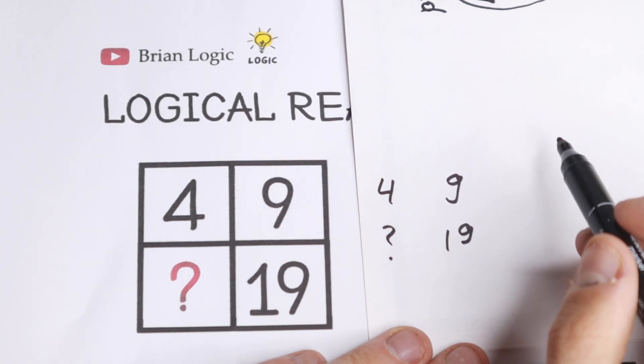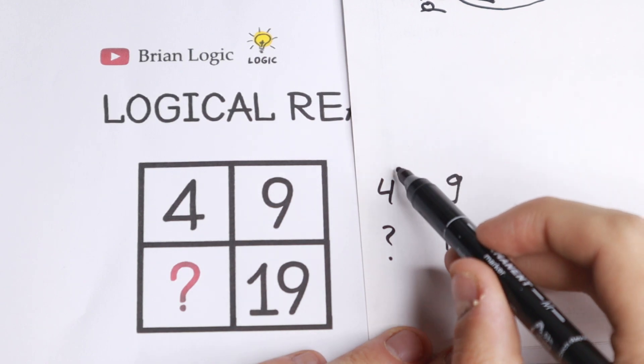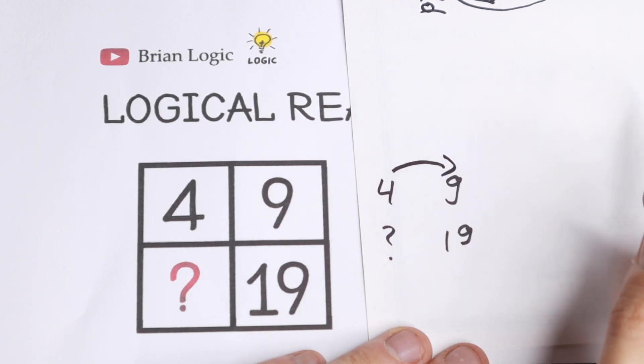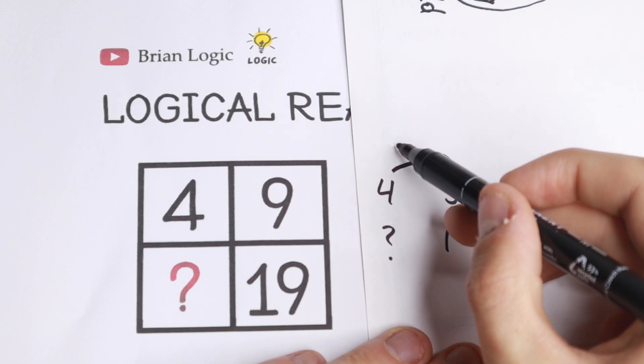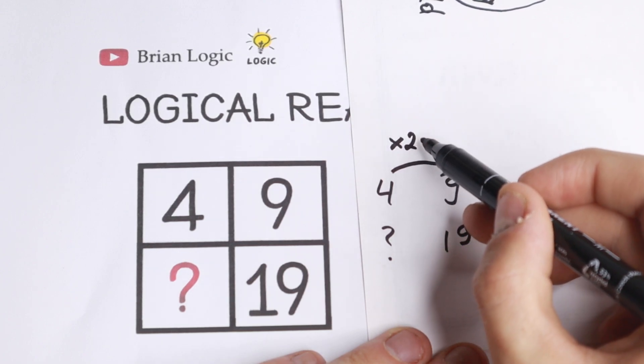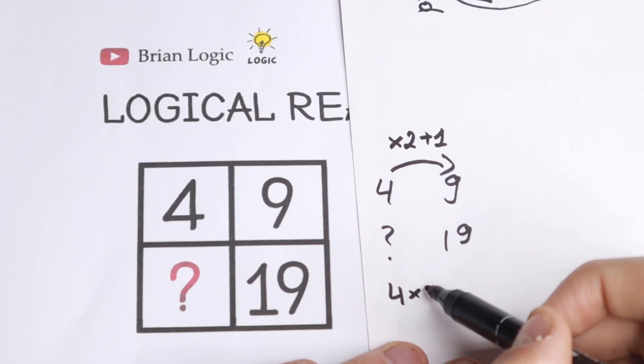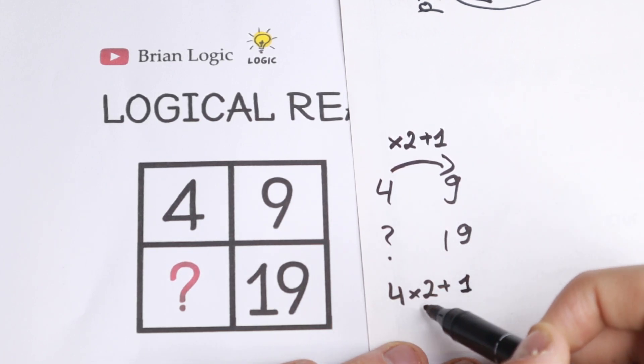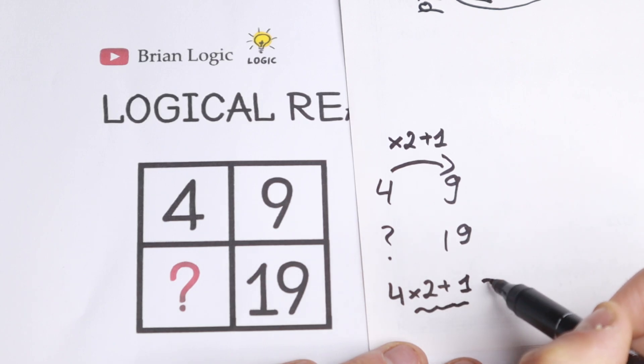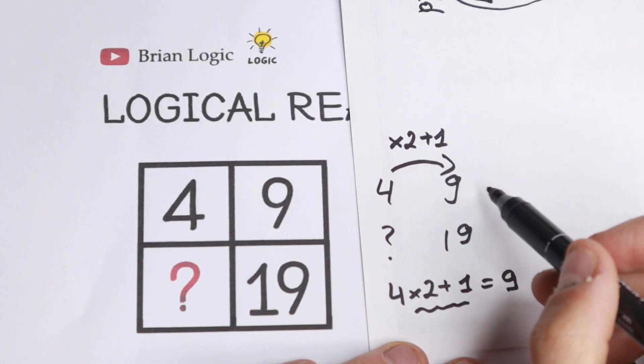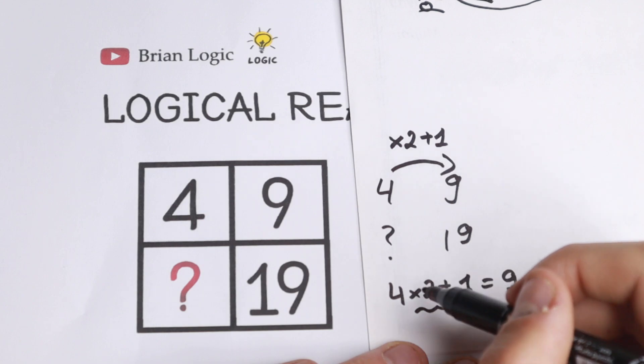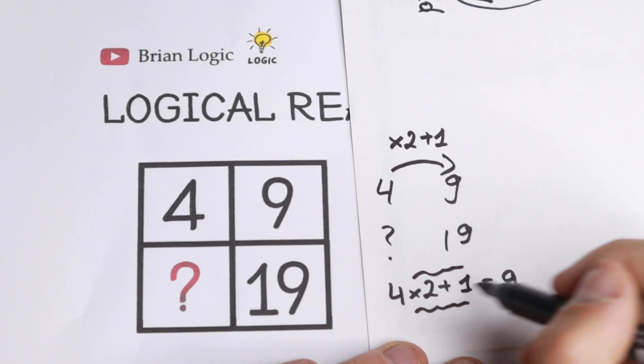If we look at 4 and 9, if we go from the left to right, we will need to multiply this 4 by 2 and add 1. So if we do this, we will have 4 times 2 and add 1. So this is our pattern, and right here we have 9. This is our pattern, times 2 and plus 1.